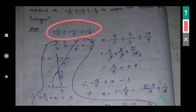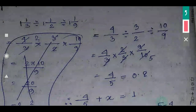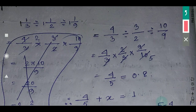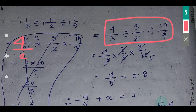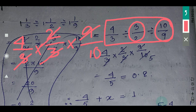The expression is: 1 and 1/3 divided by 1 and 1/2, divided by 1 and 1/9. Convert all mixed fractions to improper fractions: 1 and 1/3 is 4/3, 1 and 1/2 is 3/2, and 1 and 1/9 is 10/9. Since division is given, convert to multiplication by taking the reciprocal.